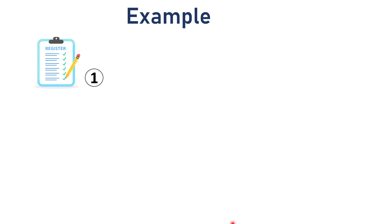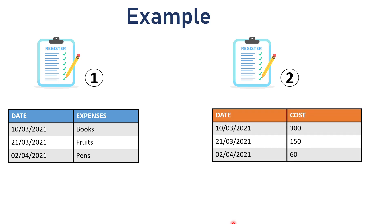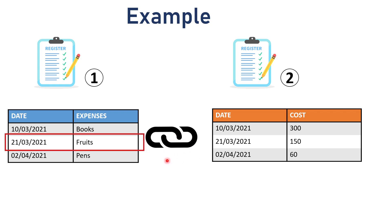Assume that you have two registers - register number 1 and register number 2. In the first register you have entered some dates, and in register number 2 you have entered dates and the cost of buying fruits. So now you check register number 2 and get the cost Rs.150 on 21 March. We have a common field as the base to join and combine these tables.